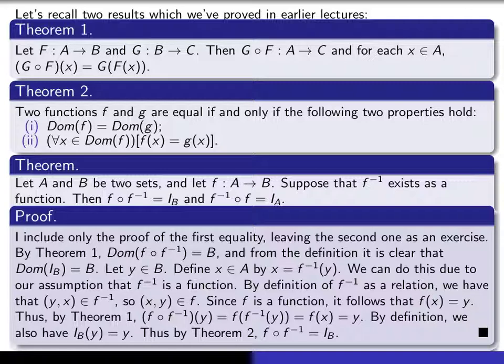So now we can calculate the value of f inverse composed with f at y by again applying theorem 1. Theorem 1 guarantees that it's equal to this. But f inverse of y is x, and f of x is y by this. So that gives us the value of f inverse composed with f at y. It's y.